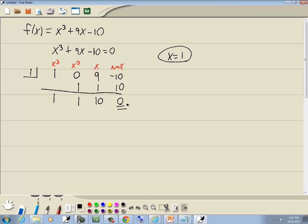Now, 0 there means that we found an answer. We found a zero, which we already knew. The calculator told us this is one of our answers. The calculator tells you it's an answer, you better get 0 as your remainder. Well, we started out as x to the third. This is now x squared. This is x. And this is no x. So we're left with x squared plus x plus 10 equal to 0.